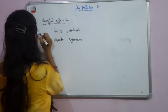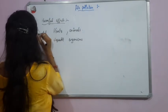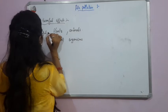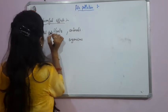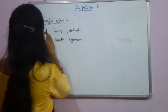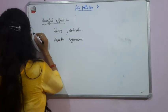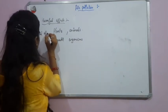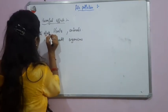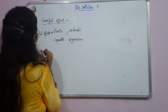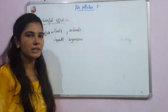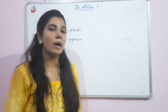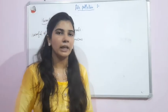Acid rain produces harmful effects on plants, animals and aquatic organisms. If we talk about other harmful effects, acid rain is responsible for corrosion of marble and tiles.